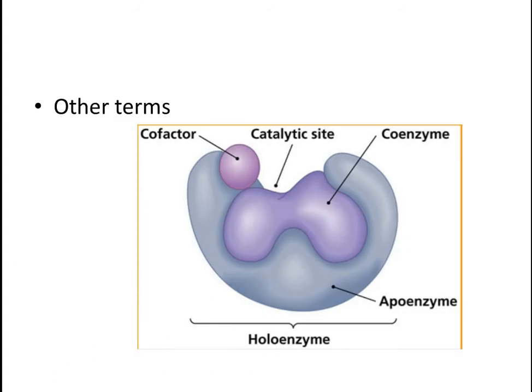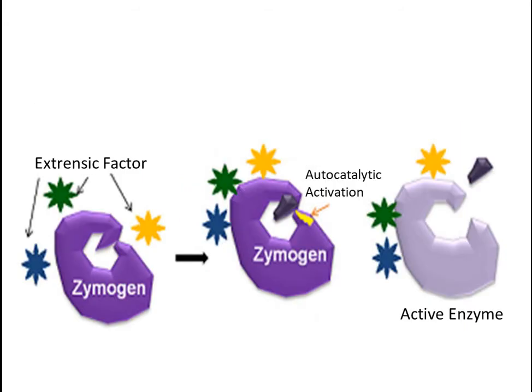Some enzymes are synthesized in our body completely in an inactive form and become active under certain circumstances or in the presence of some extrinsic environmental factors. Such inactive enzymes are called zymogens or pro-enzymes. Most proteolytic enzymes are synthesized in our body in the form of zymogens. For example, pepsin is synthesized in the form of pepsinogen, trypsin in the form of trypsinogen, and carboxypeptidase in the form of pro-carboxypeptidase A or B.